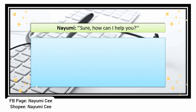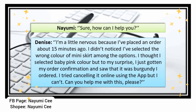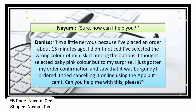I'm a little nervous because I placed an order about 15 minutes ago and I didn't notice I selected the wrong color of miniskirt. I thought I selected baby pink, but my order confirmation shows I ordered burgundy. I tried cancelling it online using the app but I can't. Can you help me with this please?